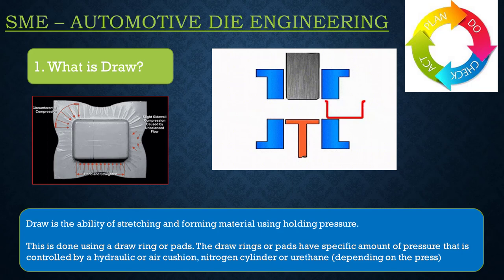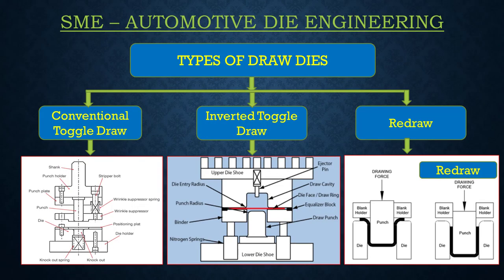Draw is essentially stretching a flat sheet and bringing it to a shape with the application of external pressure. Draw die is basically divided into three types: one is conventional toggle draw, second is inverted toggle draw, and third is redraw. In conventional toggle draw, we use punch and stripper in the top die and cavity at the bottom die.